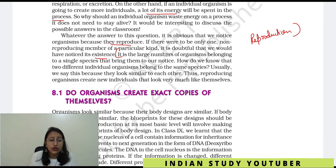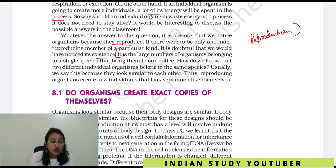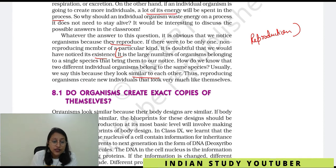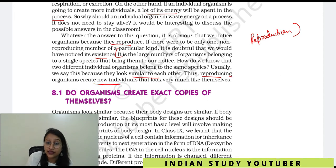How do we know that two different individual organisms belong to the same species? How do we know that they look similar? Reproducing organisms create new individuals that look very much like themselves. So when organisms reproduce, they create such individuals which look similar to the same species — they look much alike.